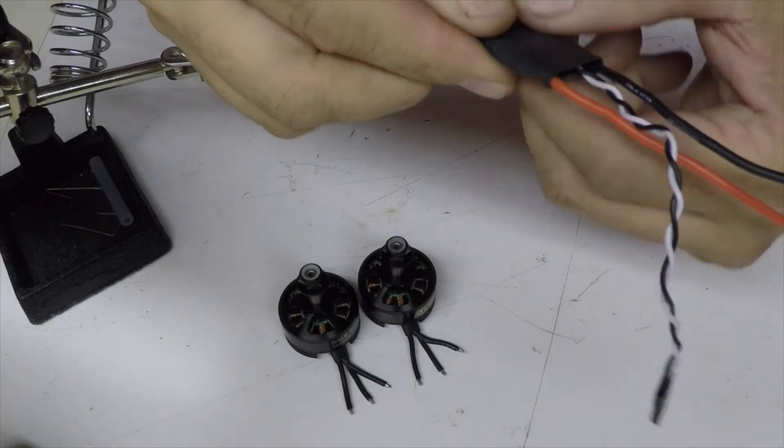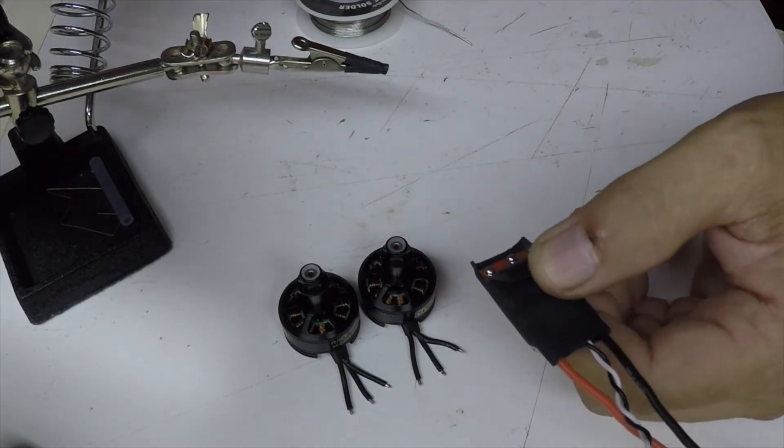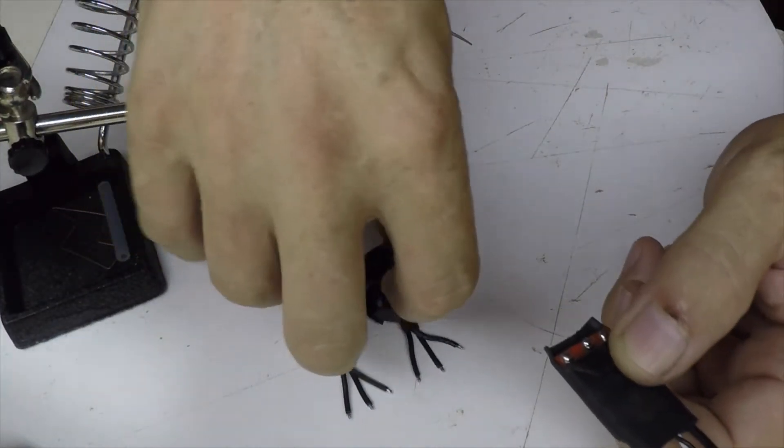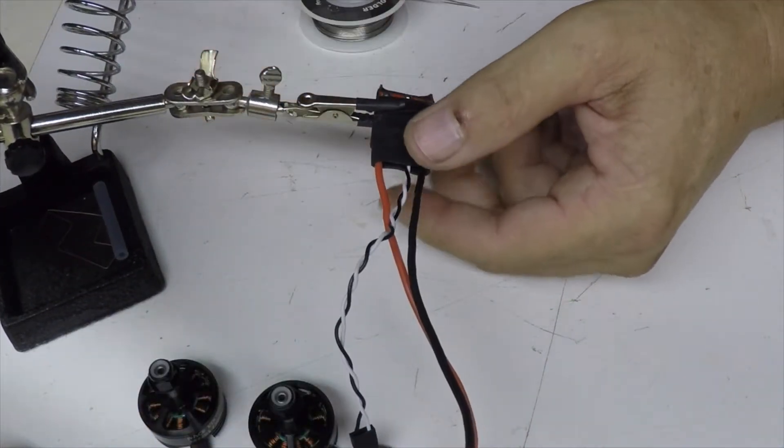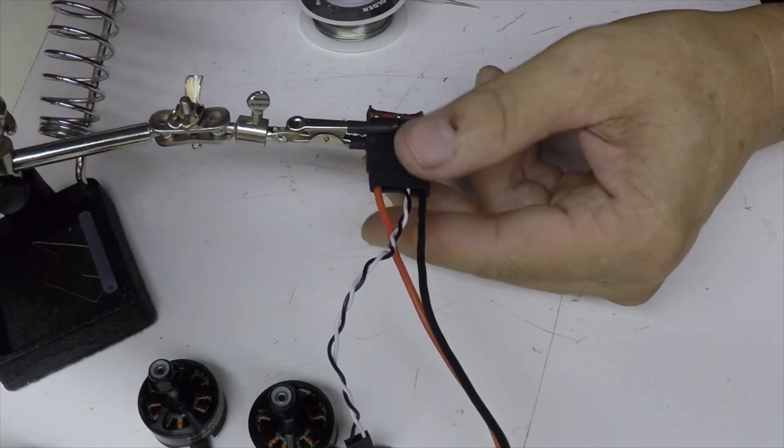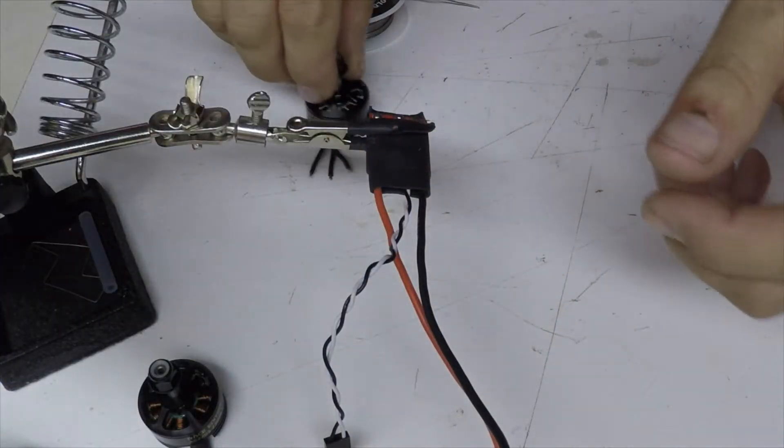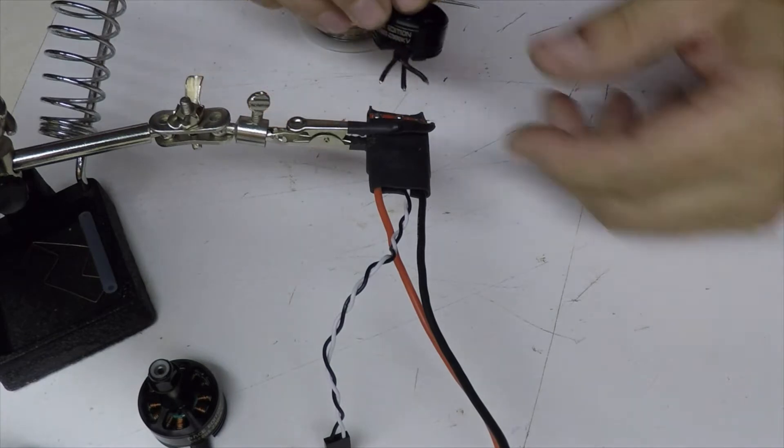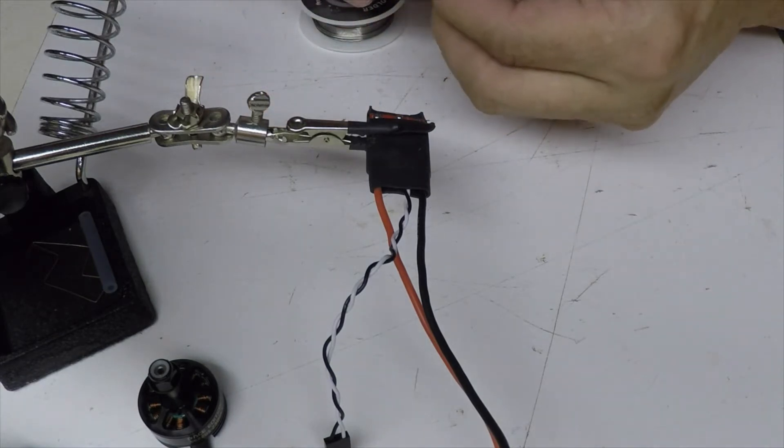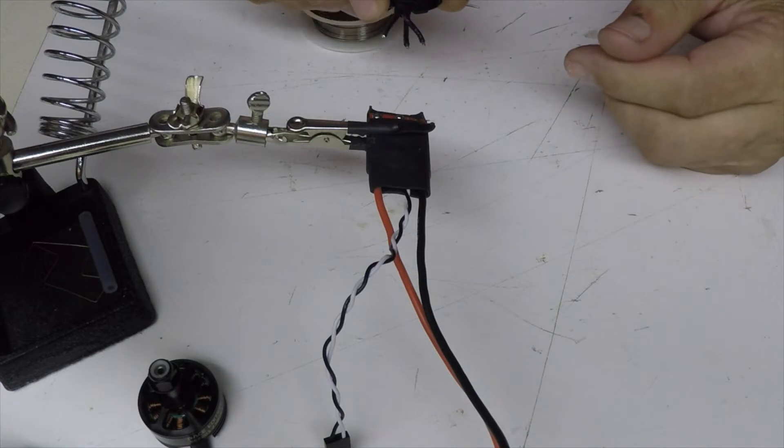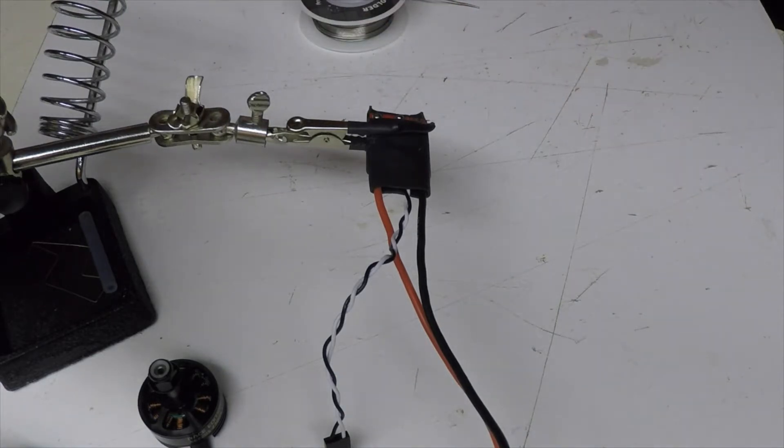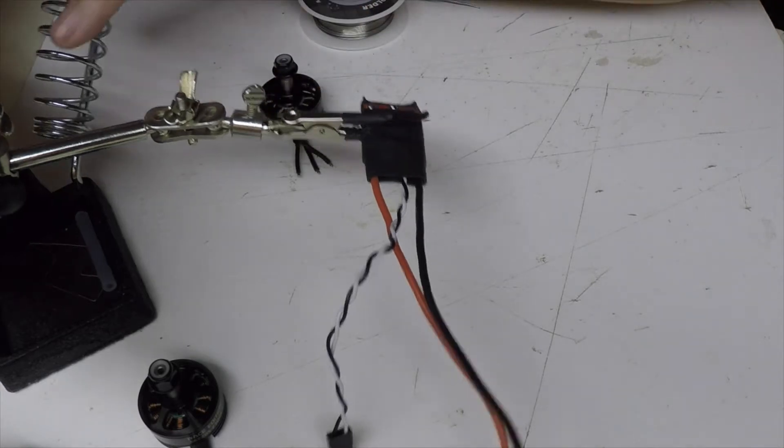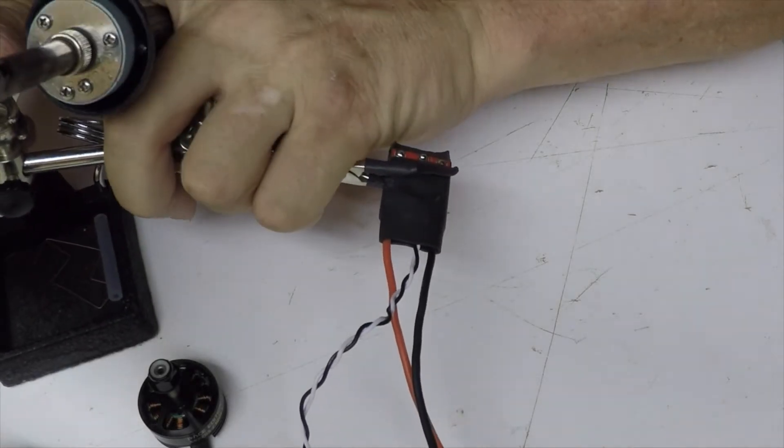I'm just going to solder my motors to the ESCs right here on the helping hands. That way that will hold my ESC for me. Hopefully you can see this. I'll solder a couple, and then I'll finish up the rest. I've already got the motors tinned and the ESCs as well.